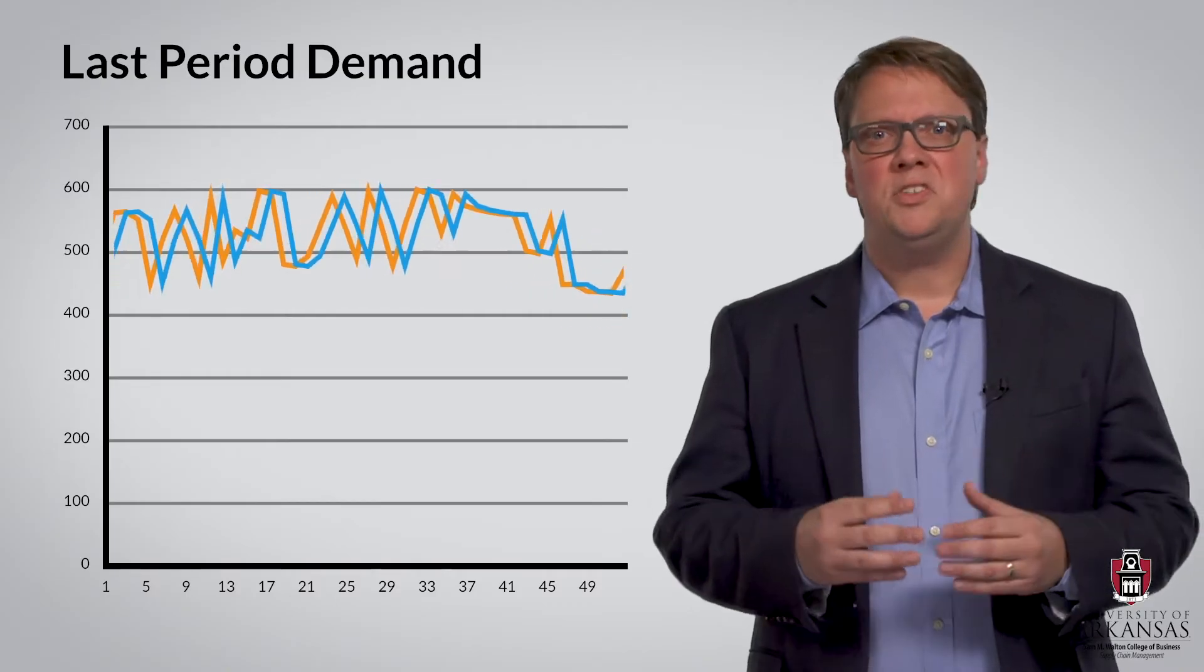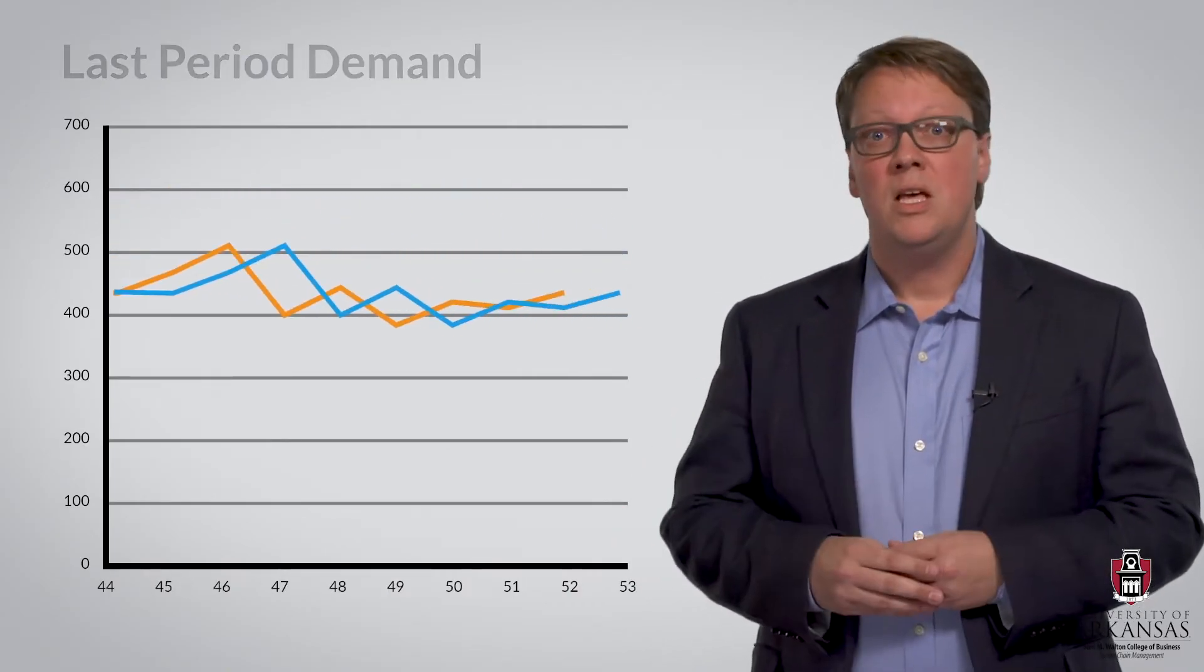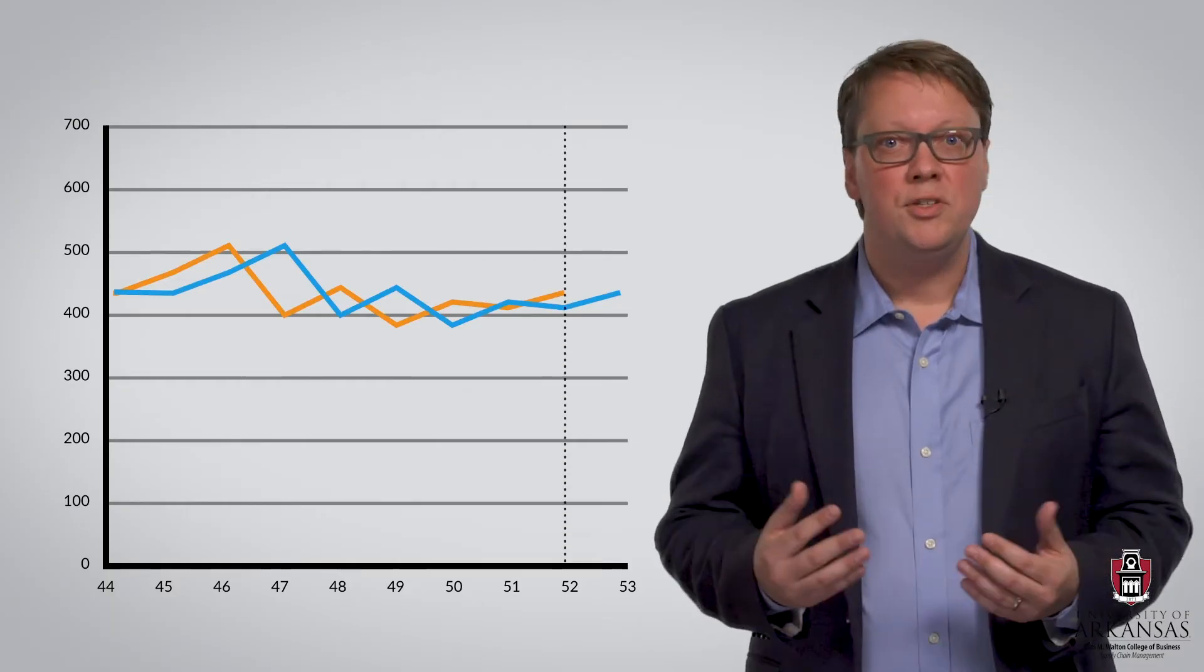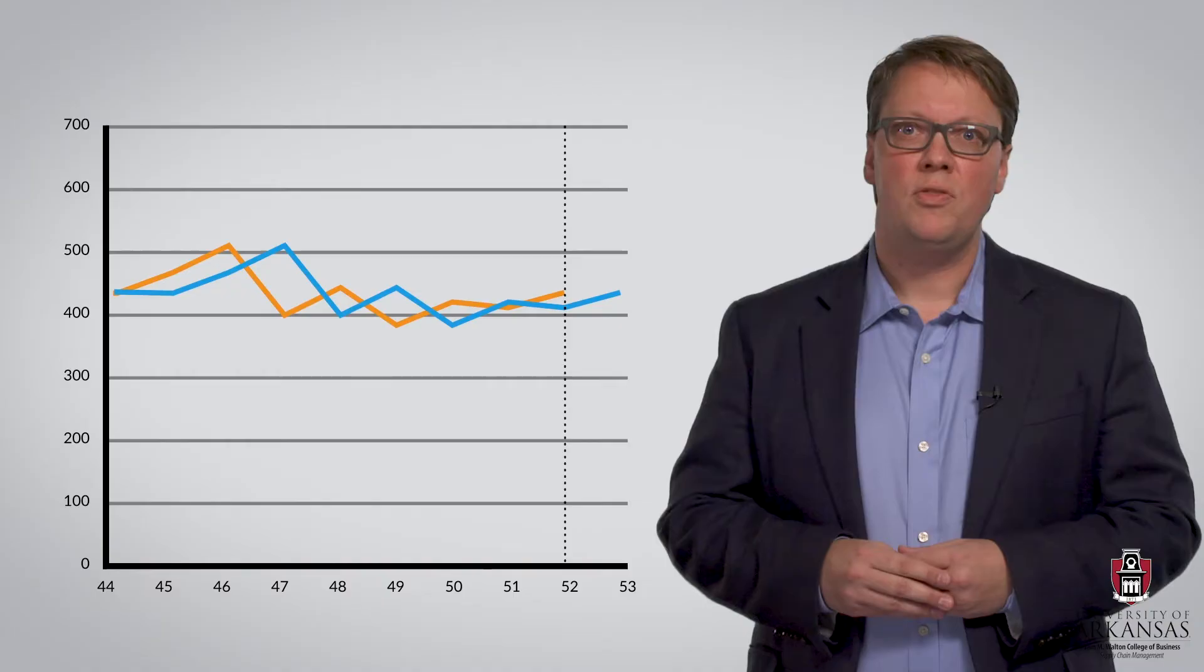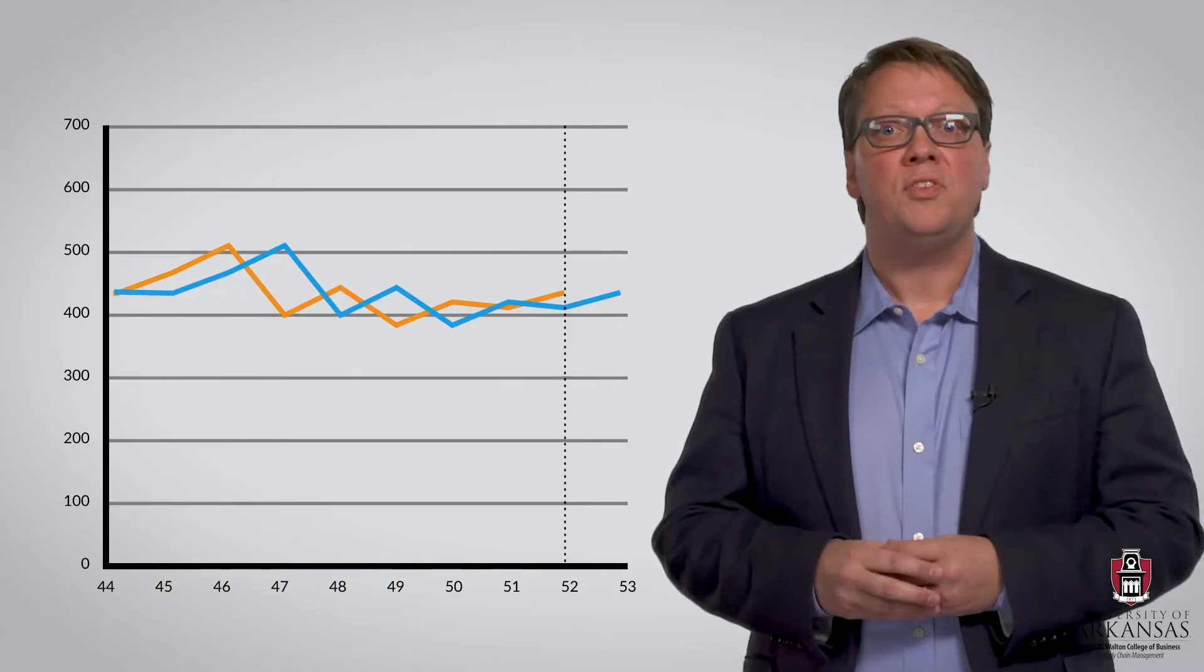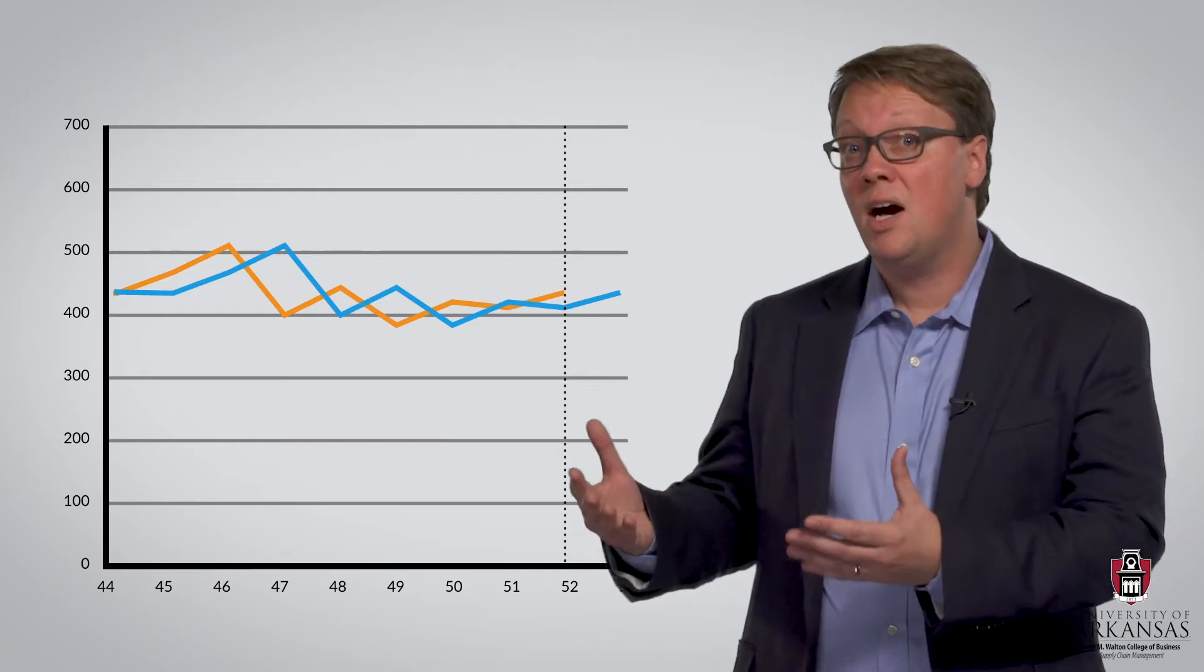Let's zoom in and take a closer look at the last 10 weeks in this data set. Remember that the orange line shows the actual demand in each of these time periods. The blue line, in turn, shows us the last period demand forecast for these same time periods.